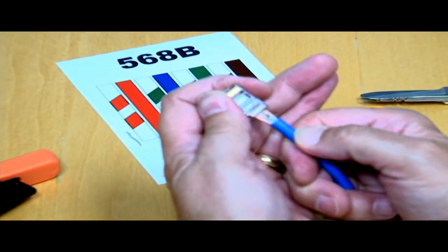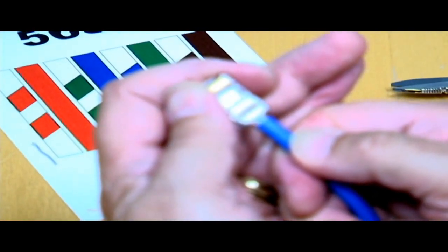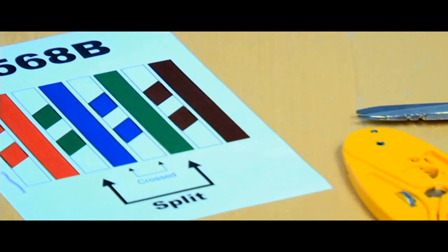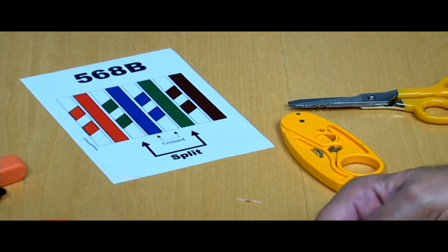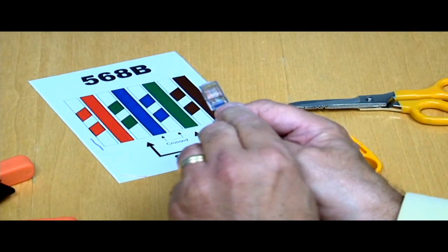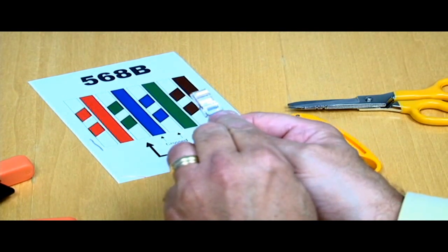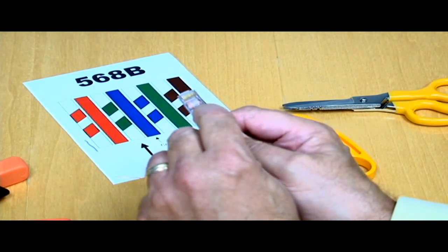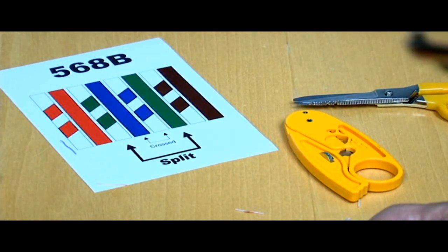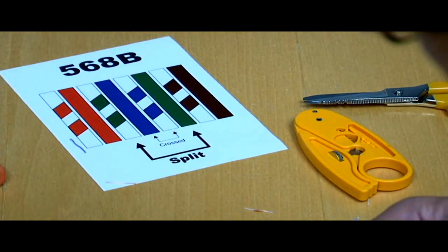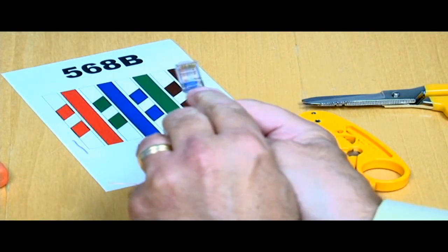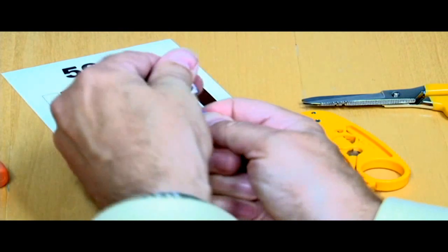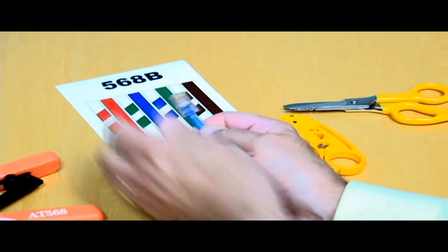Then we get our modular plug with the tab down. Each conductor, make sure they're in the proper order, will slide down in its own little channel in that plug. We push it down onto the plug and make sure that the jacket goes beyond this little spot right here for strain relief. When we crimp it, it will crimp down on the jacket and hold it.